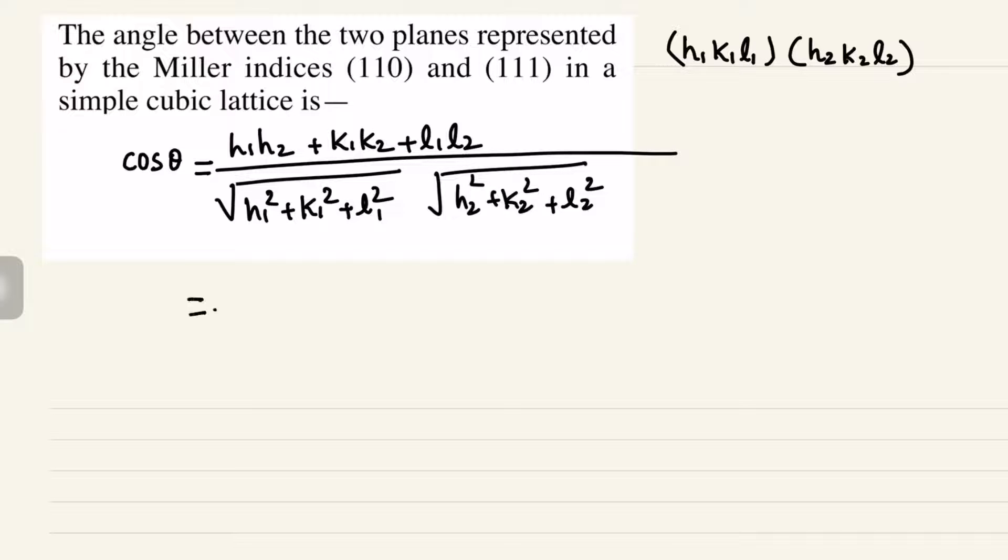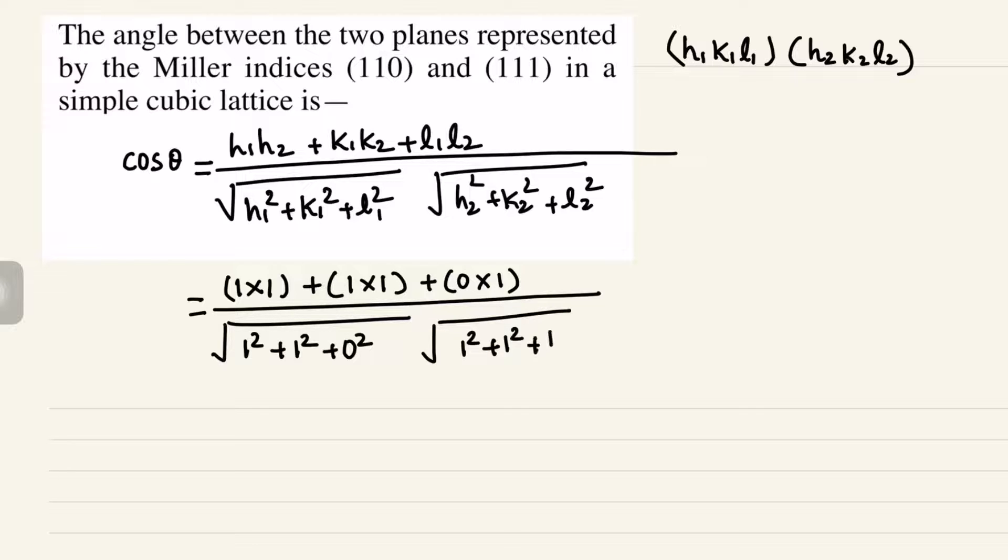Now we have to simply put the value of all these. So h1 is 1 and h2 is again 1 plus k1 is 1, k2 is also 1 plus l1 is 0 and l2 is 1 divided by 1 square plus 1 square plus 0 square that is 1 square plus 1 square plus 1 square.